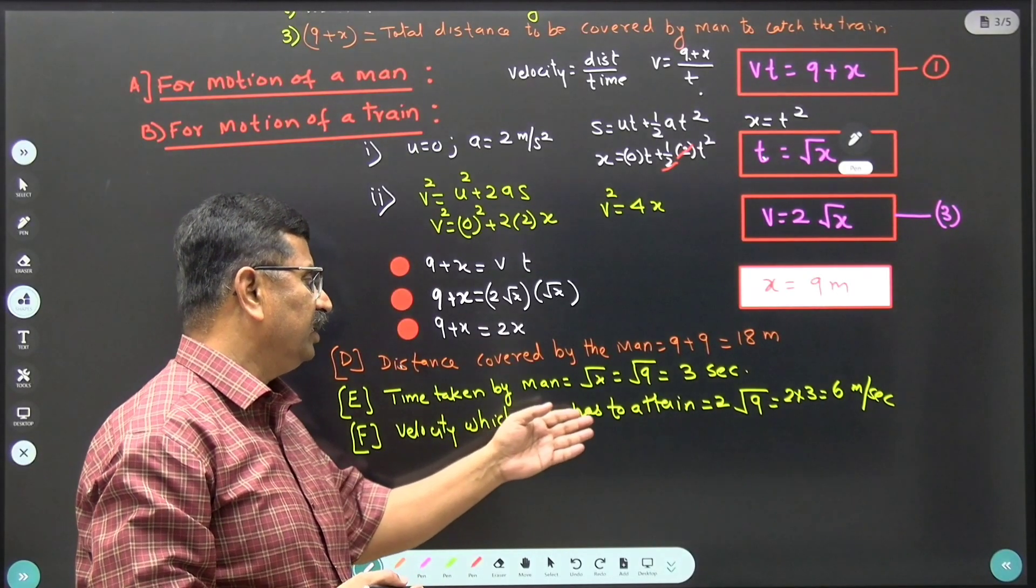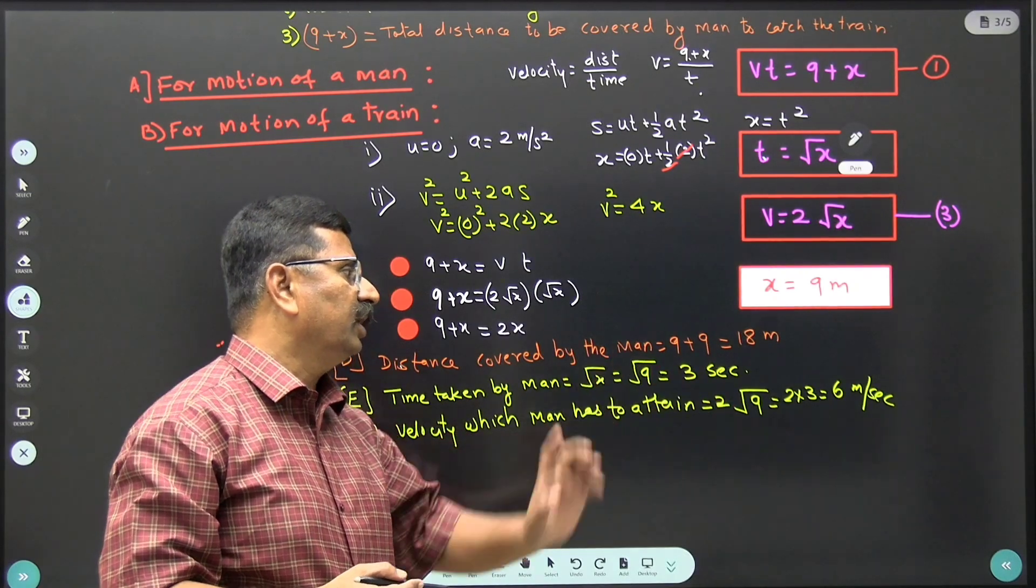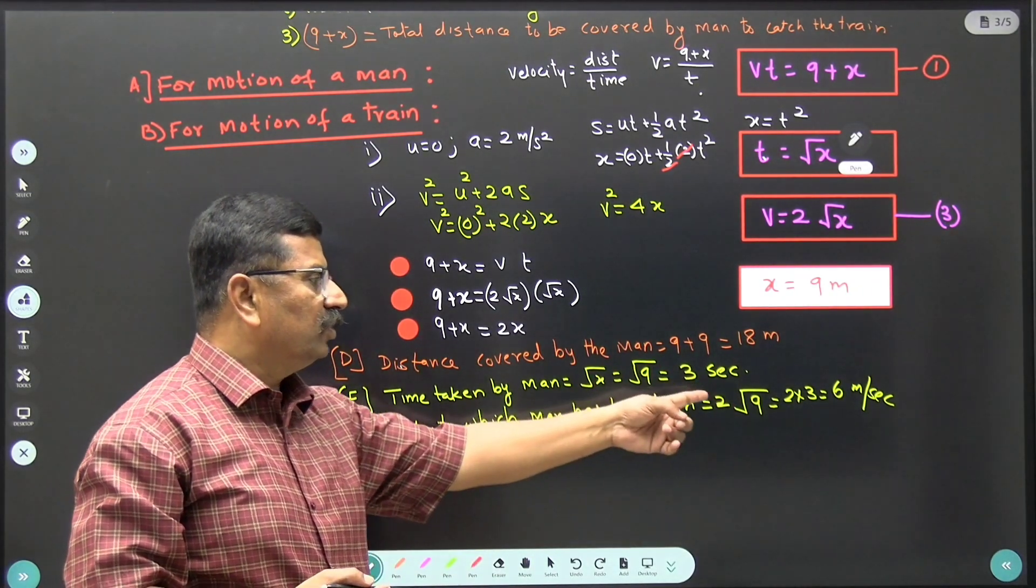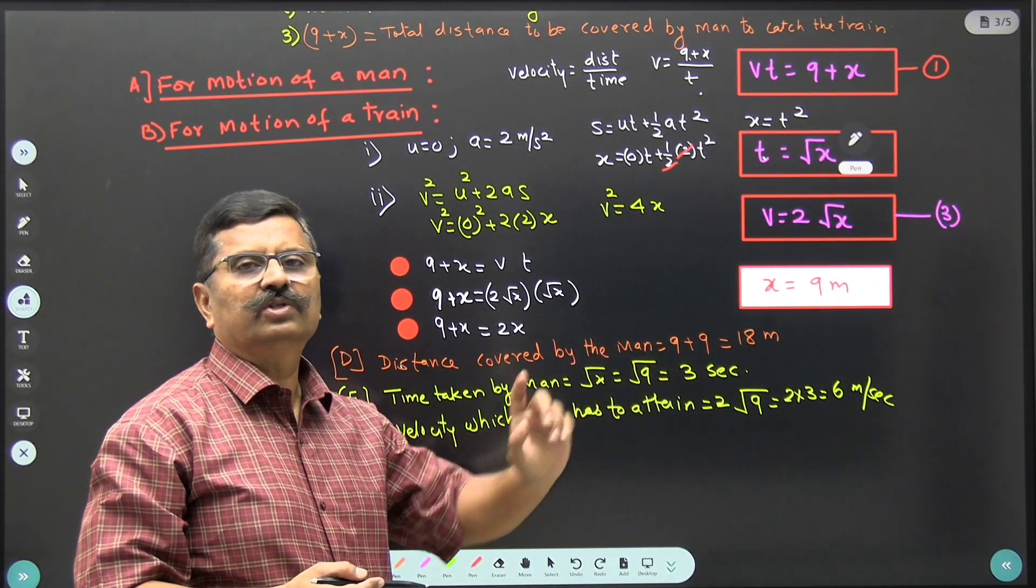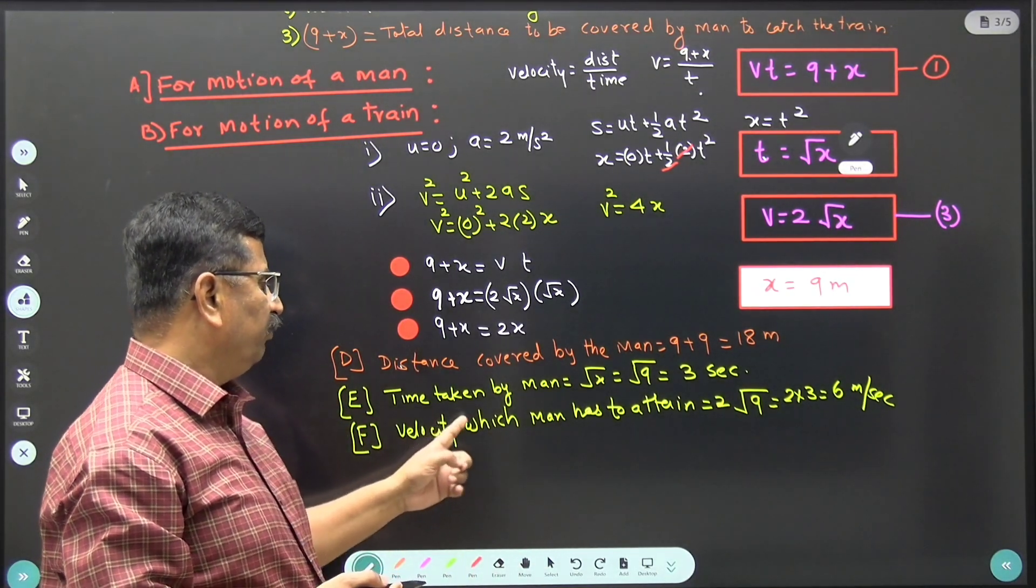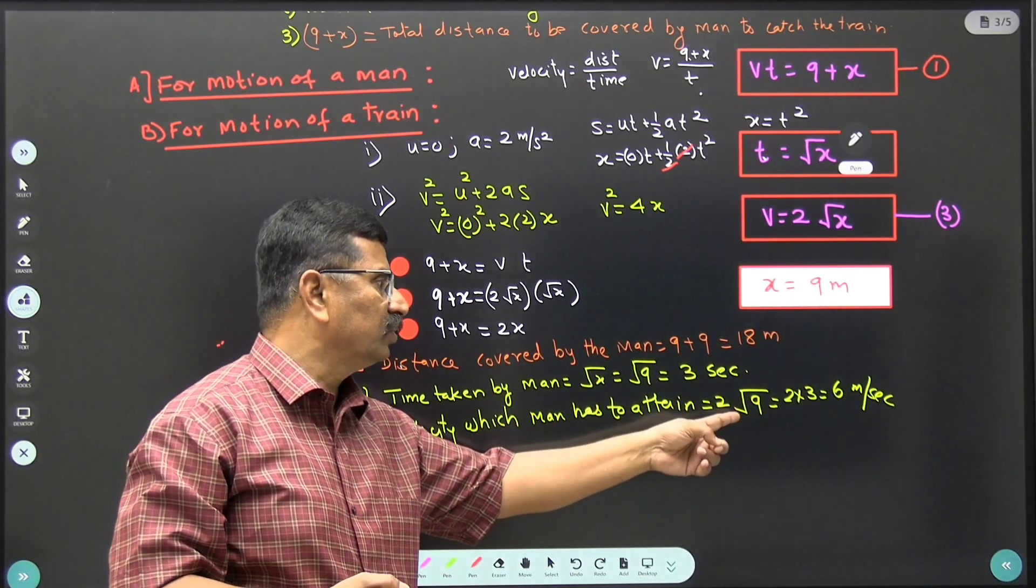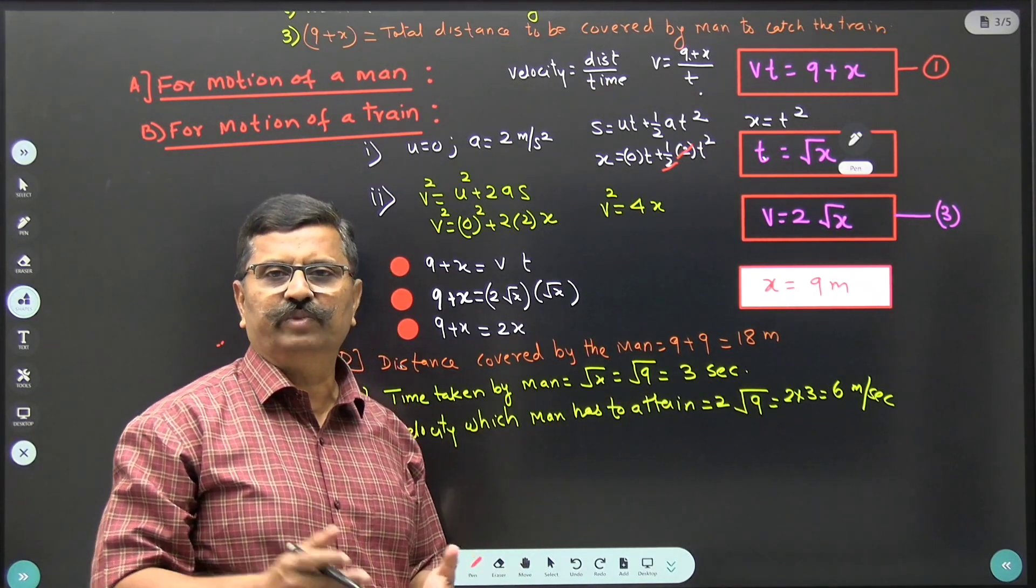Velocity which the man has to attain is 2 under root 9. So this is equal to 2 times 3 is equal to 6 meter per second. The velocity which the man has to attain is equal to 2 times 3 is equal to 6 meter per second.